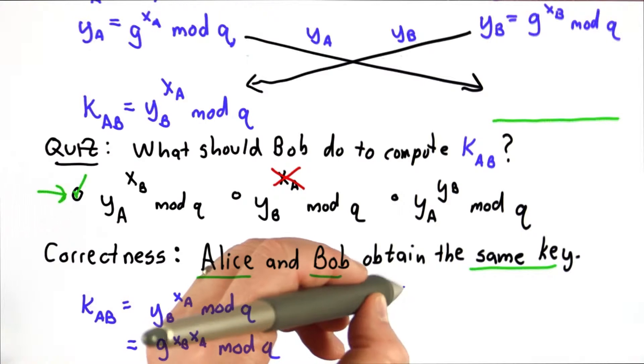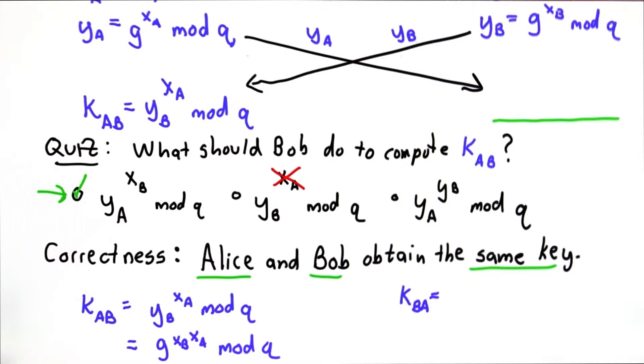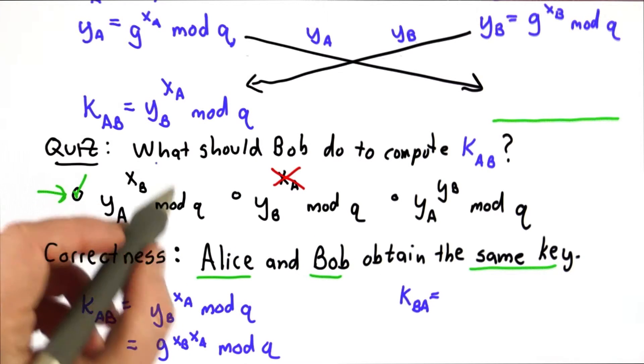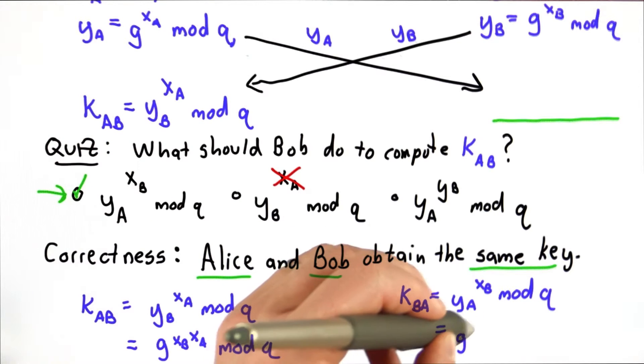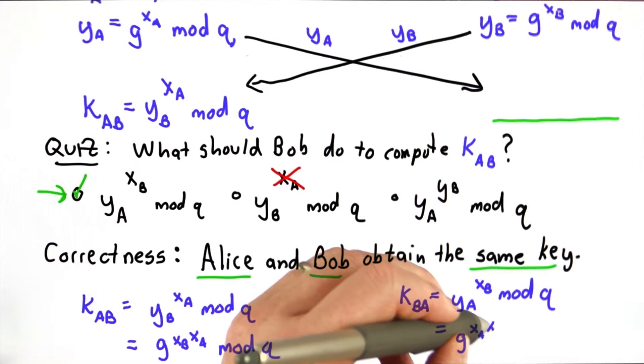The key that Bob would compute, and we'll write that as key bA since we haven't yet shown that they're equivalent using this equation. Well, yA is g to the xA. So this is g to the xA xB mod q.